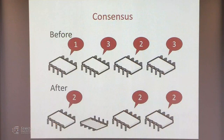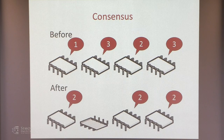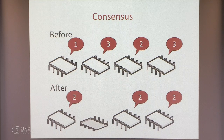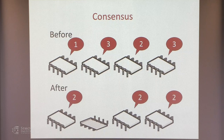So that's the end of the covering argument. Now I'm going to switch completely to a different problem using a completely different technique: valency arguments. We're going to show an impossibility result. The problem we're going to consider is consensus. Consensus, mutual exclusion, and leader election are some of the major building blocks for distributed algorithms.